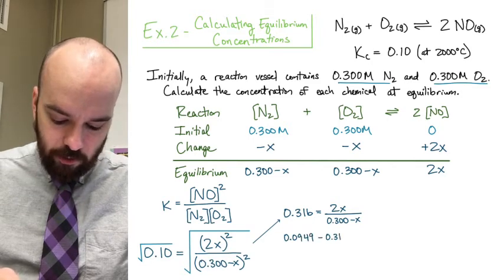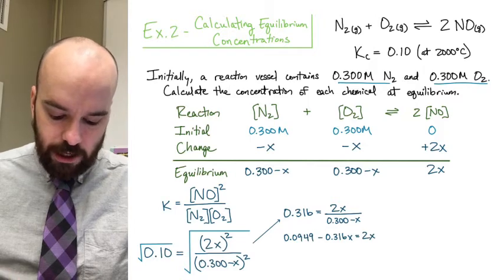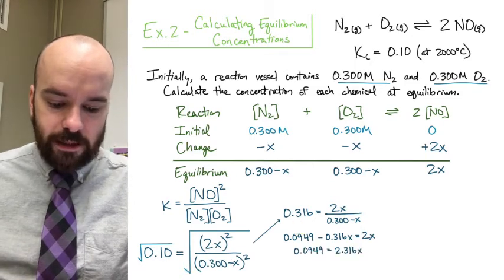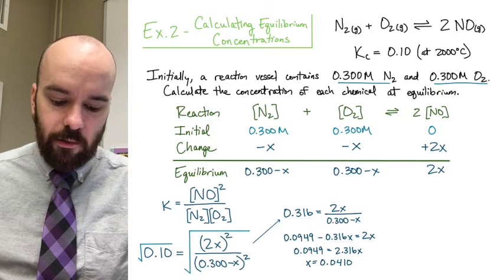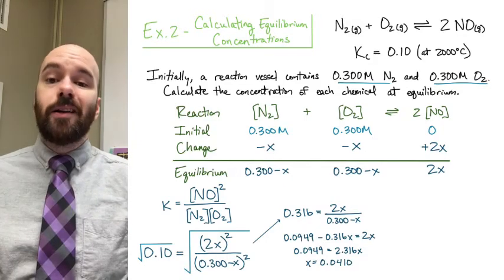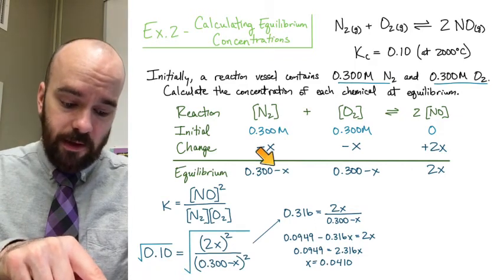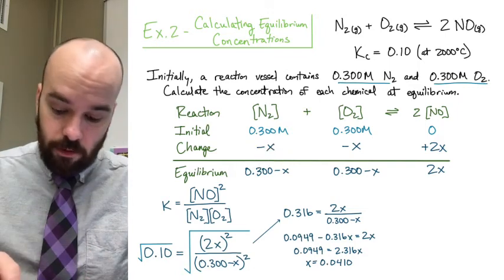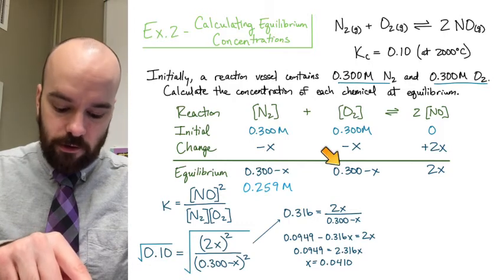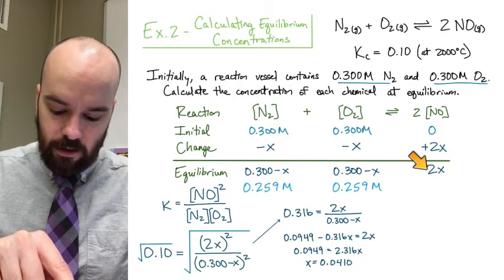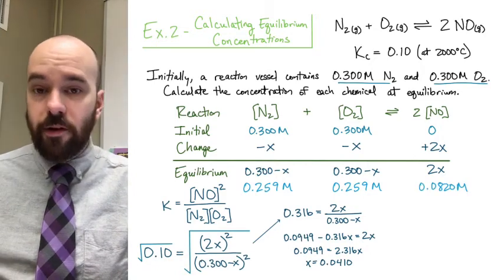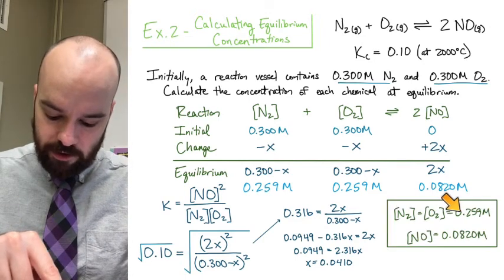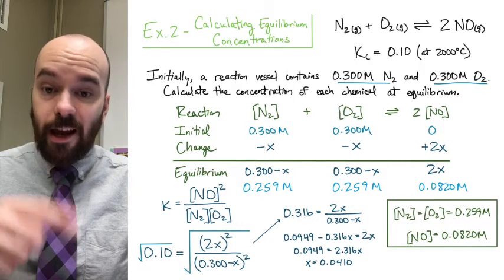Multiplying both sides by (0.3 minus X) and distributing gives 0.0949 minus 0.316X equals 2X. Adding 0.316X to both sides and dividing by 2.316 gives X equals 0.041. Now we substitute that back: N2 equals 0.3 minus 0.041 equals 0.259 molar; O2 equals 0.259 molar as well; and NO equals 2 times 0.041 equals 0.0820 molar. Those are our equilibrium concentrations.